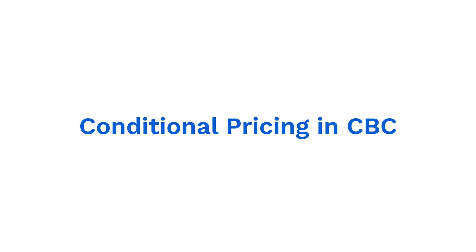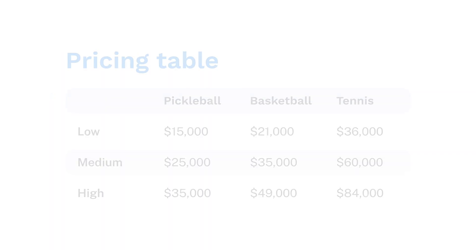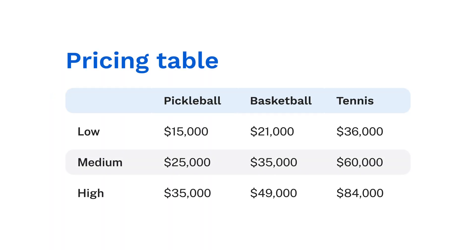In this video we'll go over the basics of when and how to use conditional pricing in a CBC study in Lighthouse Studio. Sometimes conjoint studies might have attributes with levels of significantly different qualities or quantities, and so it doesn't make sense to show the same levels of price with each level of those attributes. The conditional pricing feature lets us create a lookup table to determine the prices to show for specific combinations of attributes.